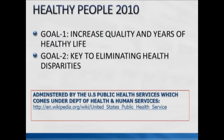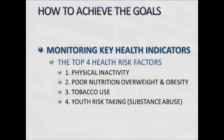The Healthy People 2010 goals were administered by the US Public Health Service under the Department of Health and Human Services. Goal one was to increase the quality and years of a healthy life, and goal two was eliminating health disparities in the population. To achieve these goals it was important to monitor four top health indicator risks: physical inactivity, poor nutrition tied to overweight and obesity, tobacco use, and youth risk behaviors such as substance abuse.